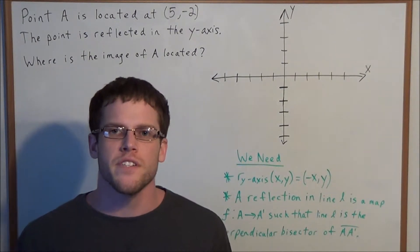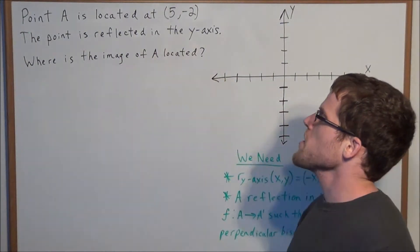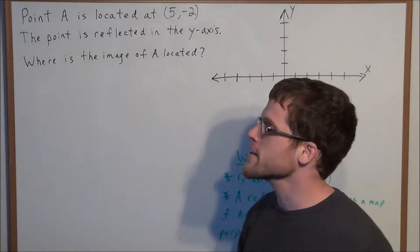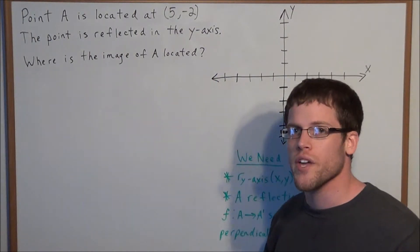Hello YouTube students, my name is Vincent, and today I want to take a look at reflections. I want to look at the problem: point A is located at 5, negative 2. The point is reflected in the y-axis. Where is the image of A located?